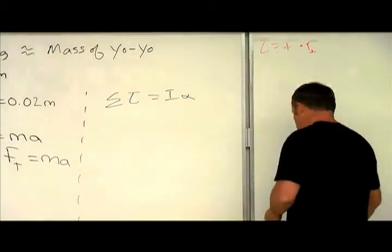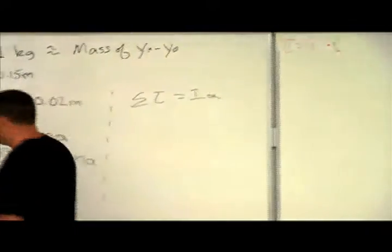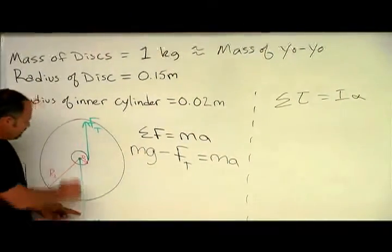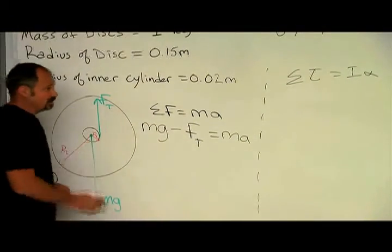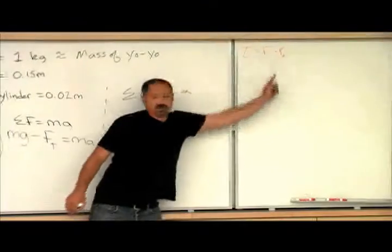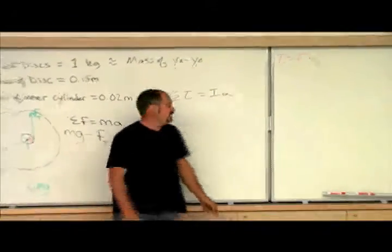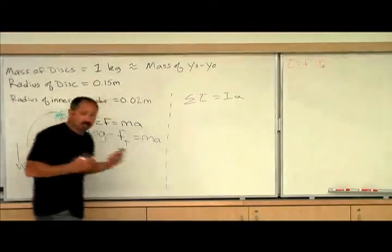And therefore, we can plug that in, we have two forces, we have gravity and the force of tension. Gravity acts at the center of mass, which is the rotation axis, so r perpendicular is zero for gravity, and therefore has no torque.